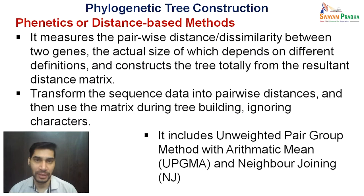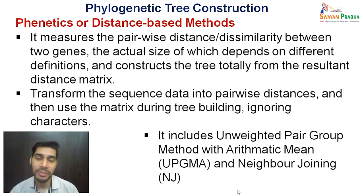The two methods broadly used under this are called as UPGMA, that is Unweighted Pair Group Method with Arithmetic Mean, and NJ method, that is also called as Neighbor Joining.